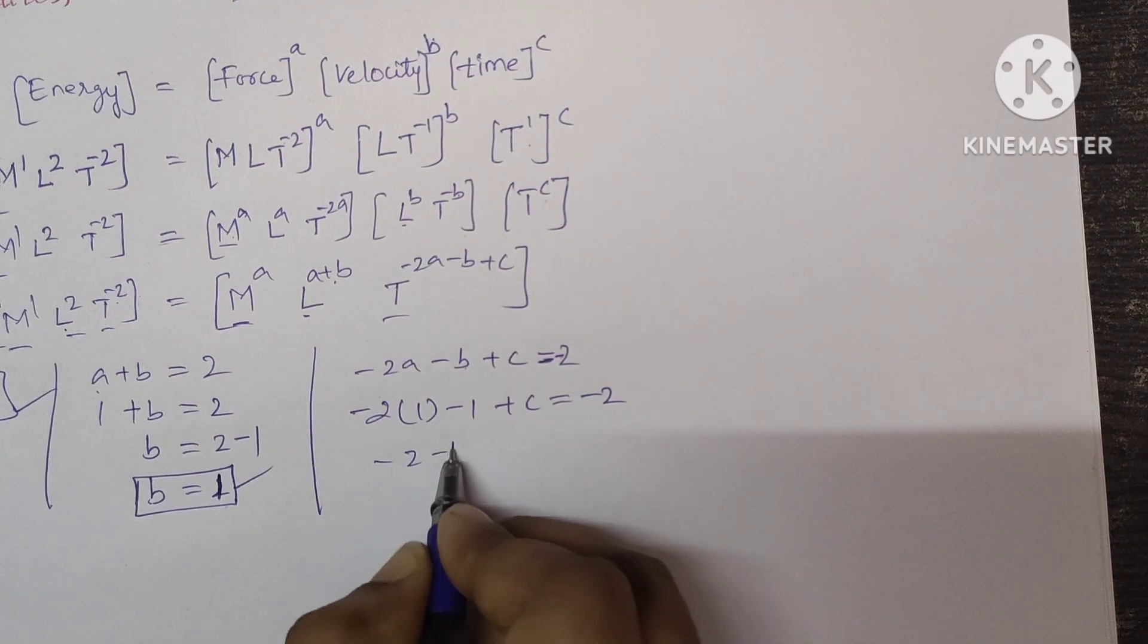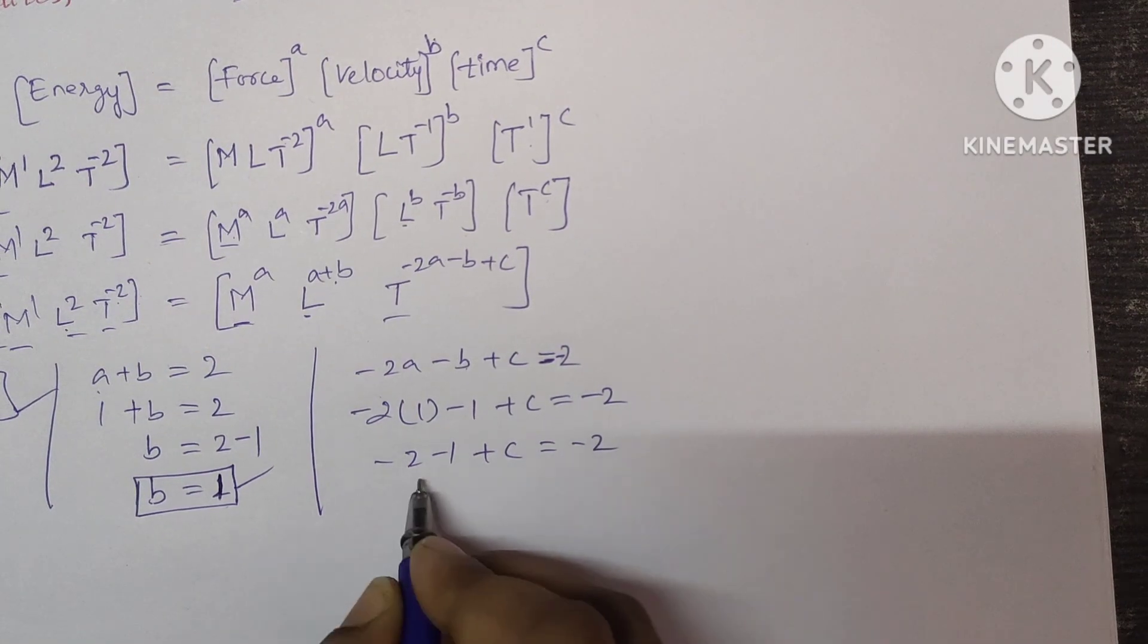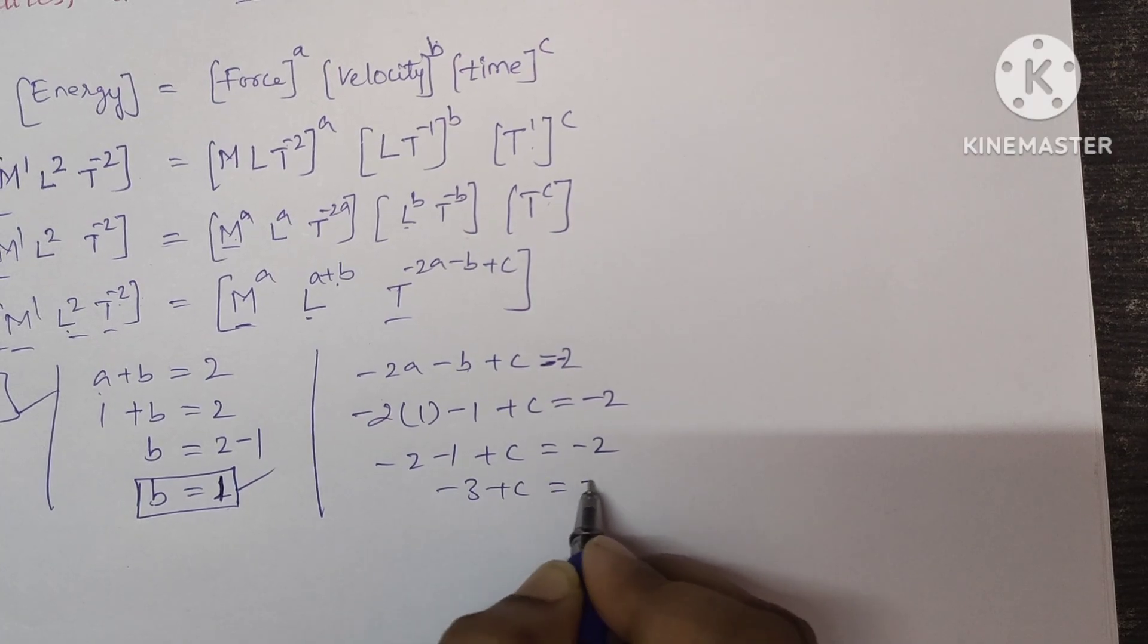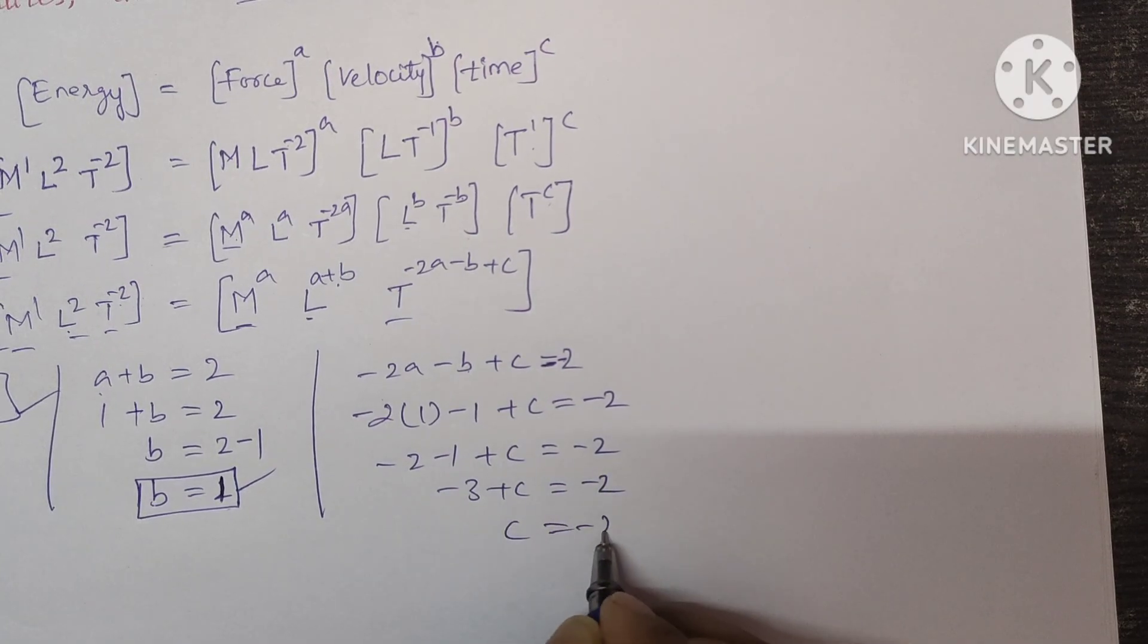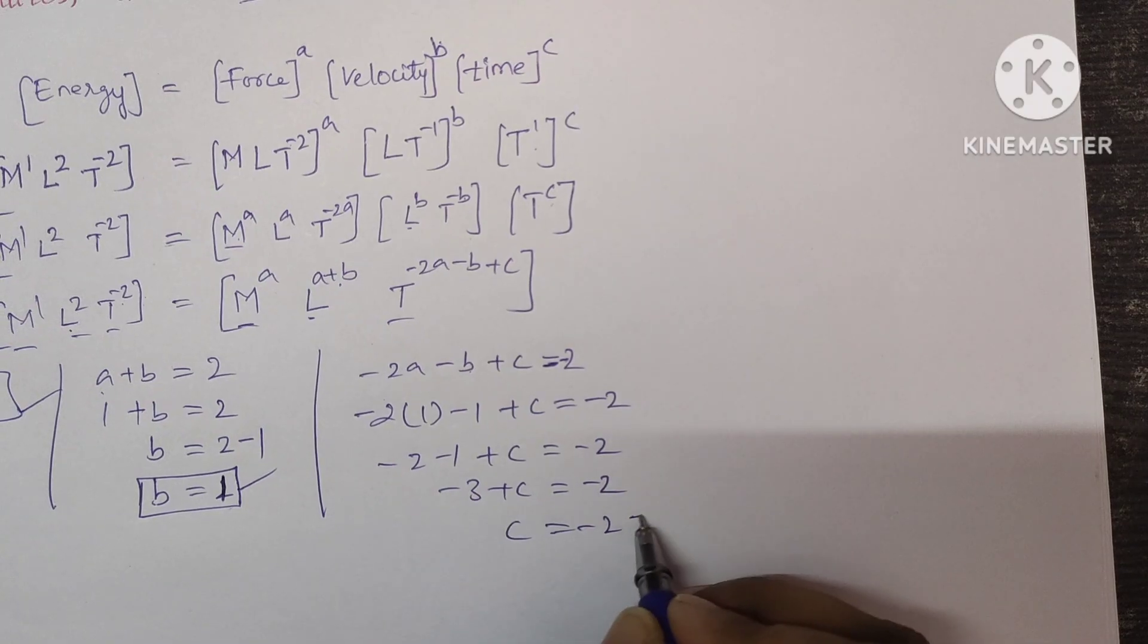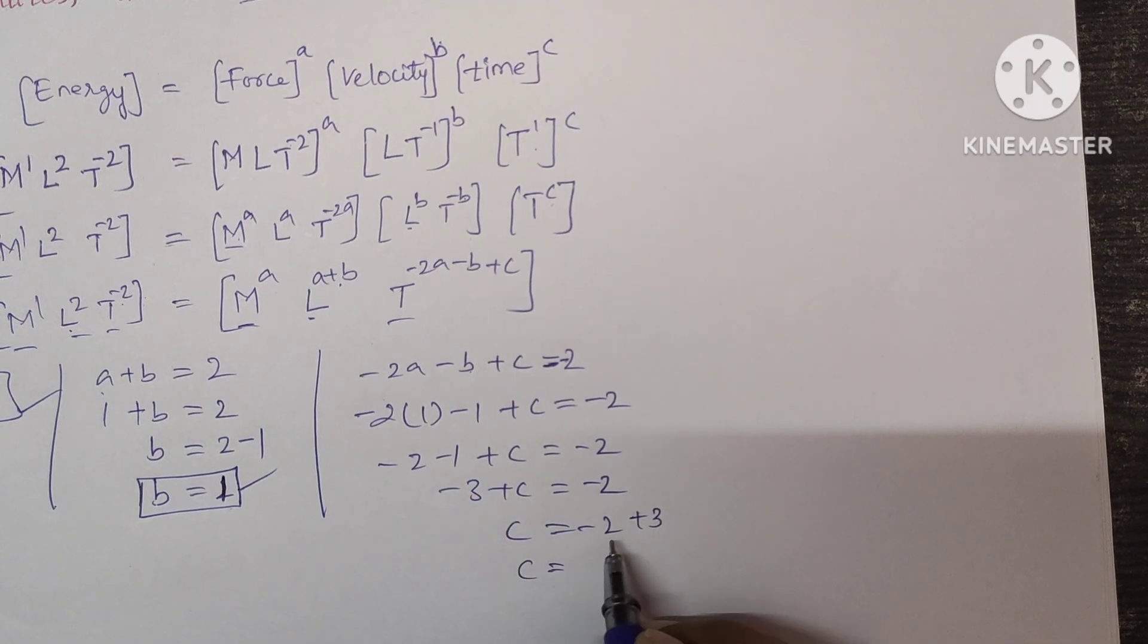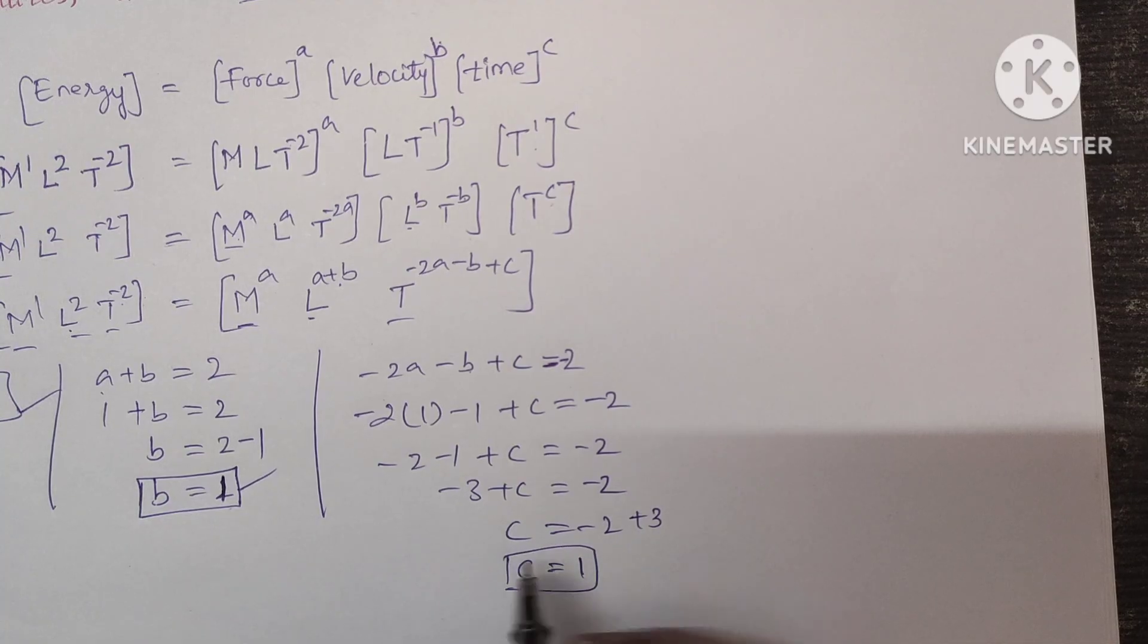Minus 2 is equal to minus 2. So minus 2 minus 1 plus C equal to minus 2. Here it is minus 3 plus C equal to minus 2. C equal to minus 2, bring this 3 to this side, it will become plus 3. So C equal to minus 2 plus 3 equal to 1. So we got it.